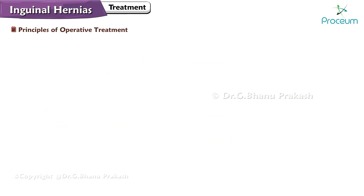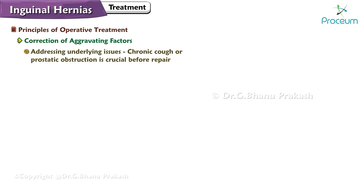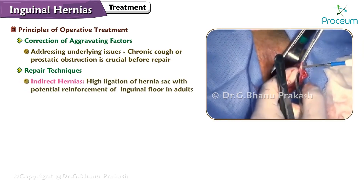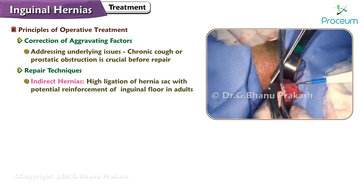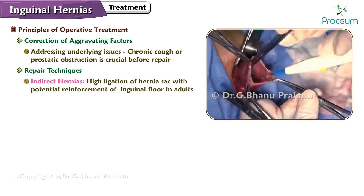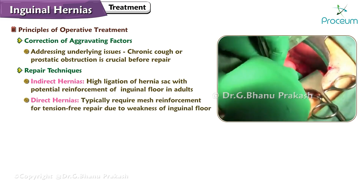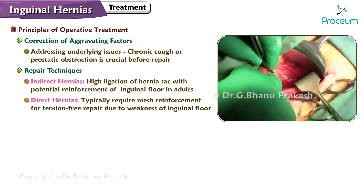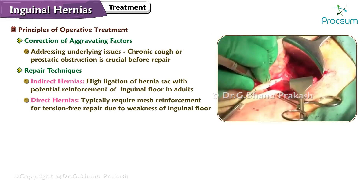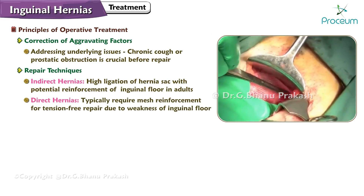Principles of operative treatment: Correction of aggravating factors, such as addressing underlying issues like chronic cough or prostatic obstruction, is crucial before repair. For indirect hernias, high ligation of the hernia sac with potential reinforcement of the inguinal floor is performed in adults. Direct hernias typically require mesh reinforcement for tension-free repair due to the weakness of the inguinal floor.